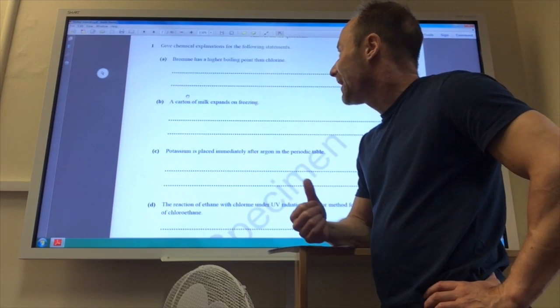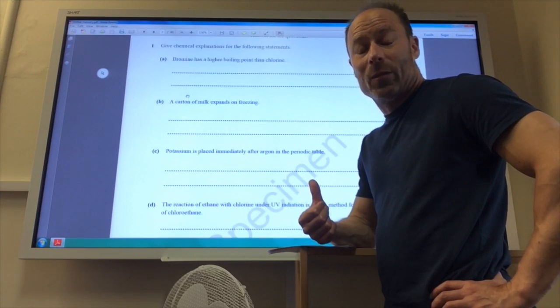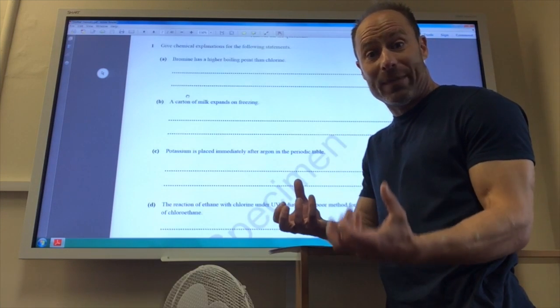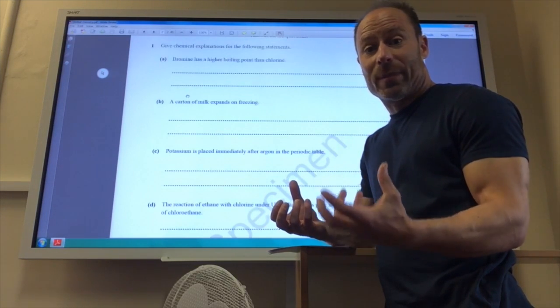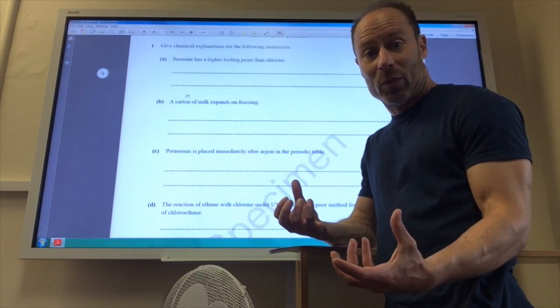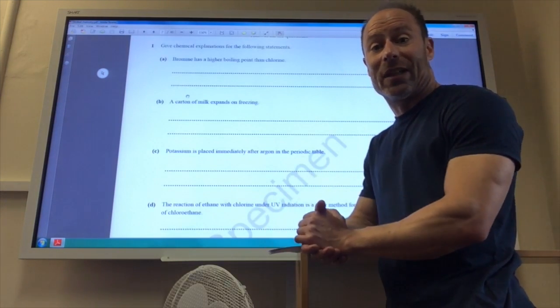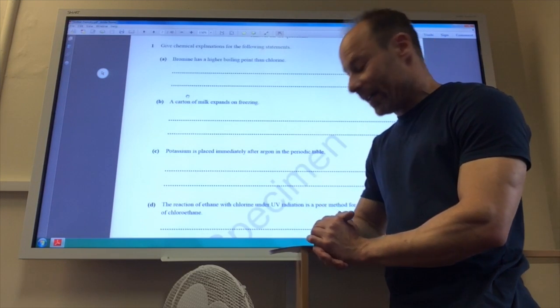First one: bromine has a higher boiling point than chlorine. This is AS chemistry. Both bromine and chlorine, the interactions between molecules will be London forces. The strength of London forces depends on the number of electrons that you have in a molecule. Bromine has more electrons than chlorine and therefore has stronger London forces and therefore a higher boiling point.